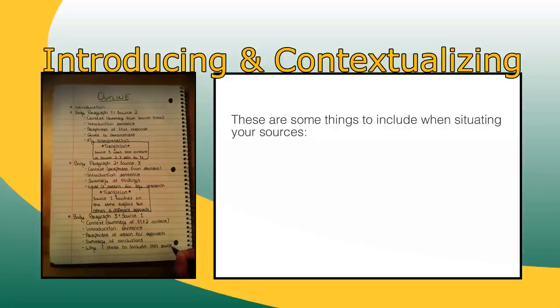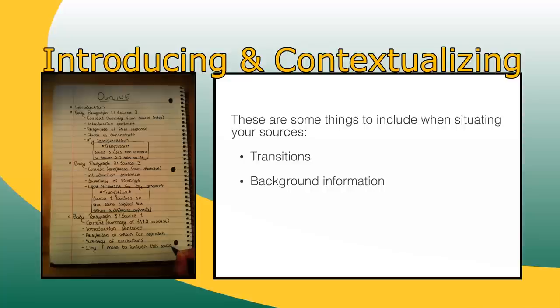Context is another crucial aspect of how you will include your sources in your paper. Be sure to introduce each source with an appropriate transition, giving background information that situates the piece in relation to the parts of the scholarly conversation you have already addressed. It is often also appropriate to provide the relevant political, social, or historical context when discussing each source.